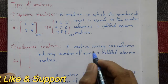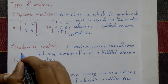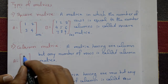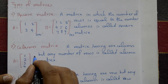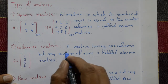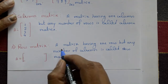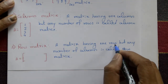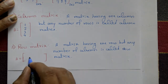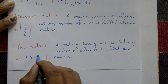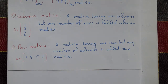Second type: column matrix. A matrix having one column but any number of rows is called a column matrix. Example: matrix A with only one column and elements 1, 2, 3, 4 in rows — that is a column matrix. Third type: row matrix. A matrix having one row but any number of columns is called a row matrix. Example: only one row with elements 1, 5, 6, 7 but multiple columns — that is a row matrix.